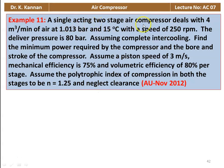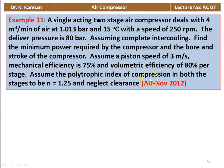A single-acting two-stage air compressor deals with 4 m³ per minute of air at 1.013 bar and 50 degrees Celsius with a speed of 250 RPM. The delivery pressure is 80 bar. Assume complete intercooling. Find the minimum power required by the compressor and the bore and stroke. Assume piston speed of 3 meters per second, mechanical efficiency 70 percent, volumetric efficiency 80 percent per stage, polytropic index n = 1.25, and neglect clearance volume.